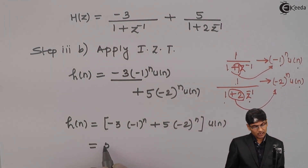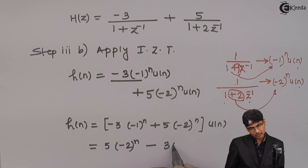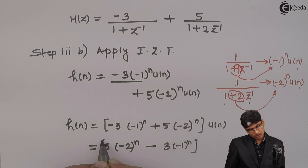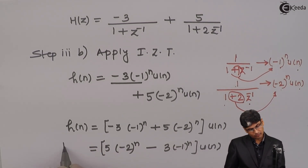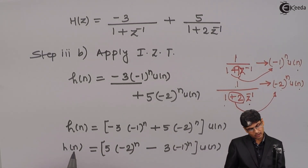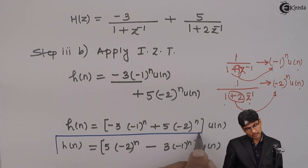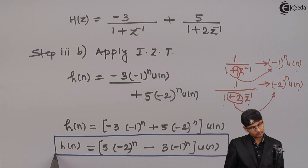Adjusting the order: h(n) = [5·(-2)ⁿ - 3·(-1)ⁿ]·u(n). This is the required impulse response. Thank you.